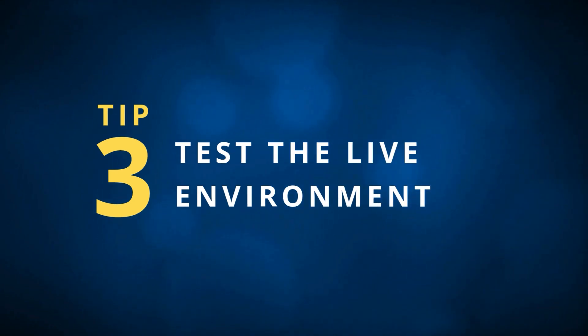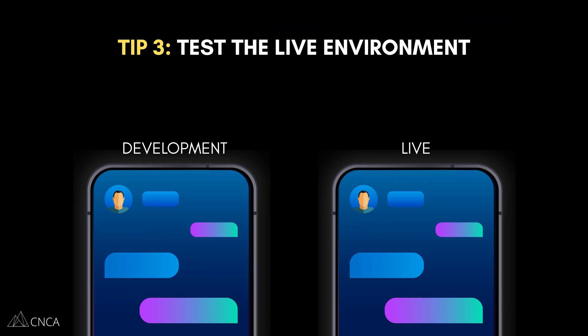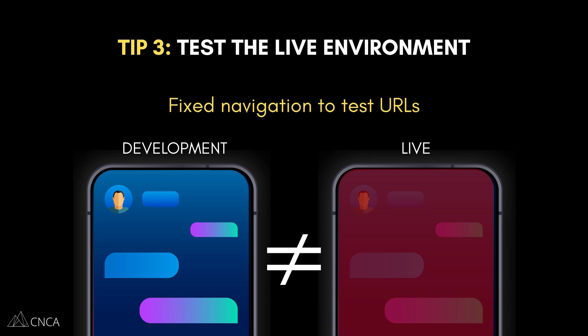Tip number three: test the live environment. This is the one that's the most overlooked by far. Just because something works in development mode does not mean it's going to work the exact same way in live mode. That's because your API keys might be different, your links may be fixed to test URLs, and your live database might be empty if you forgot to copy data over, like pricing plans or marketplace categories.